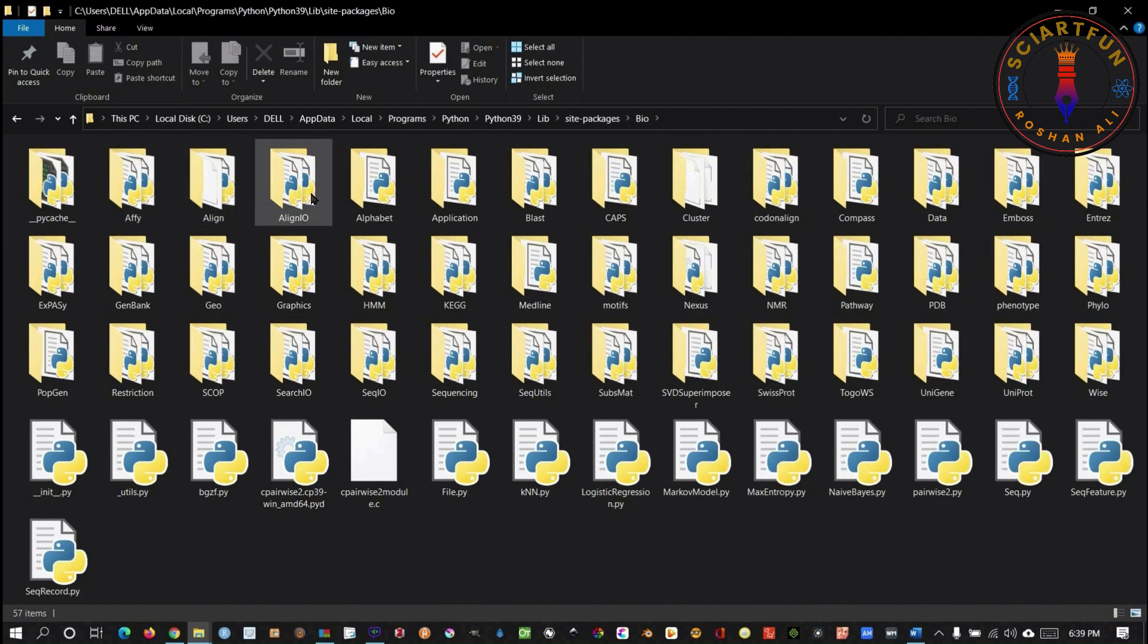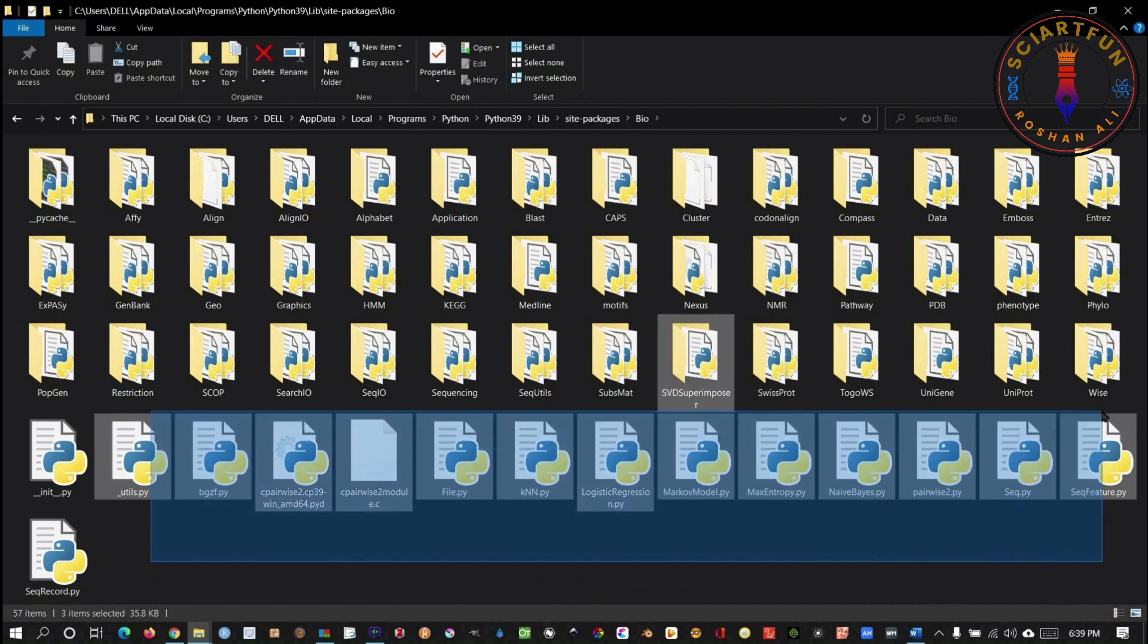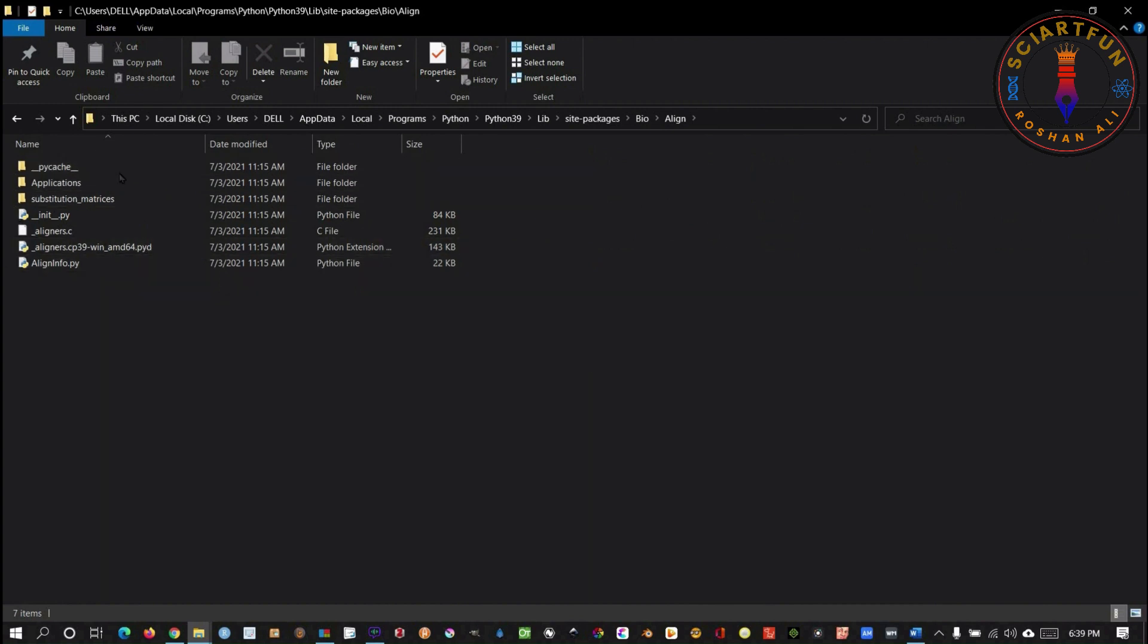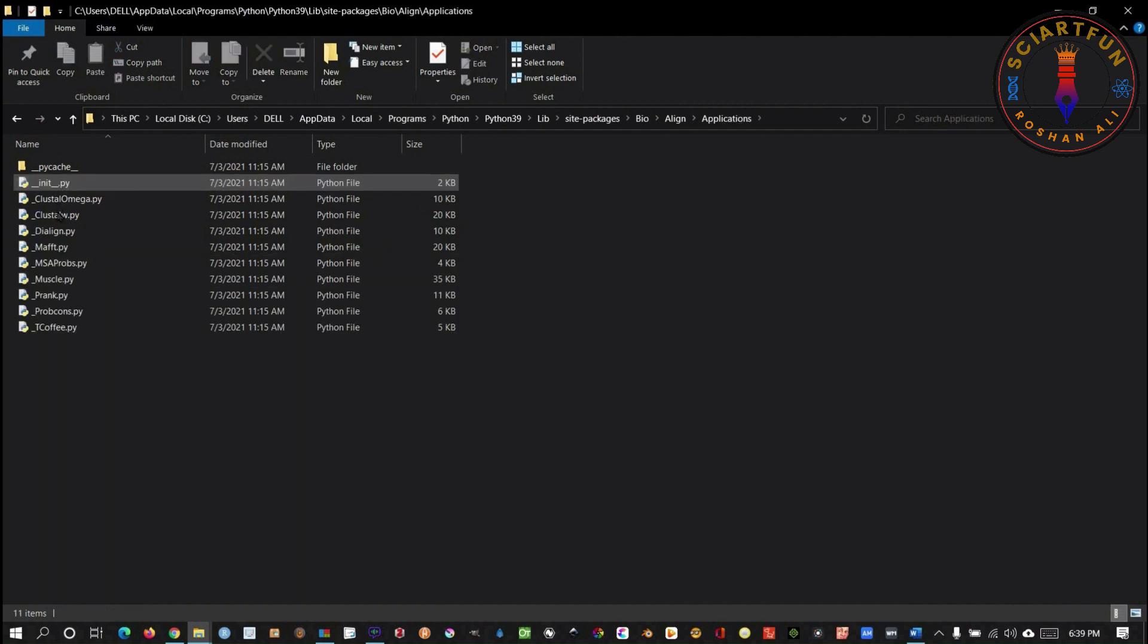Let me zoom in. All these are sub-packages. These are modules and some other files. Let me open the align sub-package. Here is the list of sub-sub-packages and modules. You can open any of the sub-sub-packages to see the modules inside it.